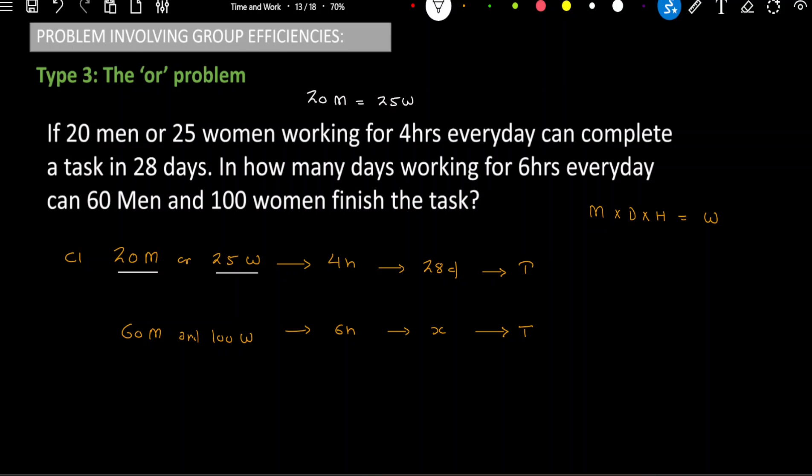It means we can replace 20 men with 25 women. Now, it is up to you whether I want to use a group of men or a group of women. The rest of the data will remain same. So, let's say I want to use the group of women. So, 25 women working for 4 hours every day can complete a task T in 28 days. This is going to be the first equation.